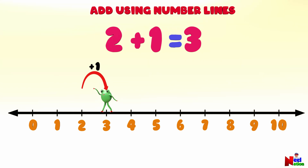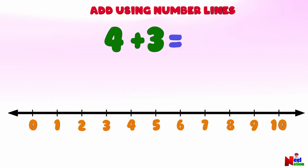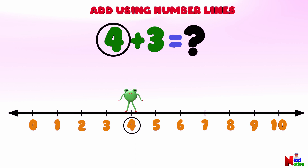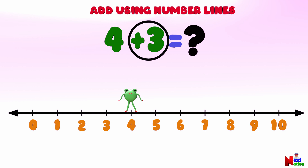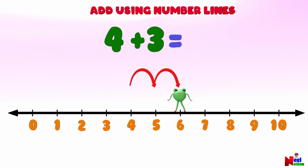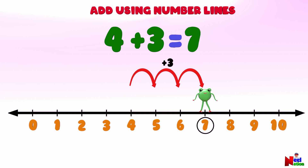Next, what is four plus three? Can you find number four on the number line? To add three to number four, starting from number four, Mr. Lutu will jump three points forward to the right — one, two, three. Where has he landed? Number seven! Four plus three equals seven.